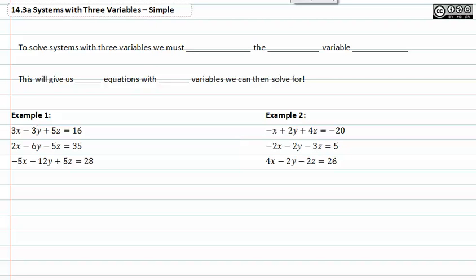To solve systems with three variables, we must eliminate the same variable twice. This will give us two equations with two variables we can then solve for.